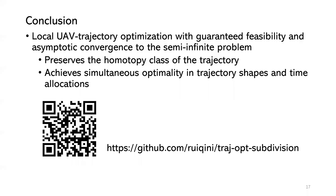In conclusion, we propose a local UAV trajectory optimization with guaranteed feasibility that asymptotically converges to the semi-infinite problem. Our method preserves the homotopy class of the trajectory, and we achieve simultaneous optimality in trajectory shapes and time allocations. The QR code links to our GitHub repository where we have uploaded our code and data. Please feel free to use it. Thank you.